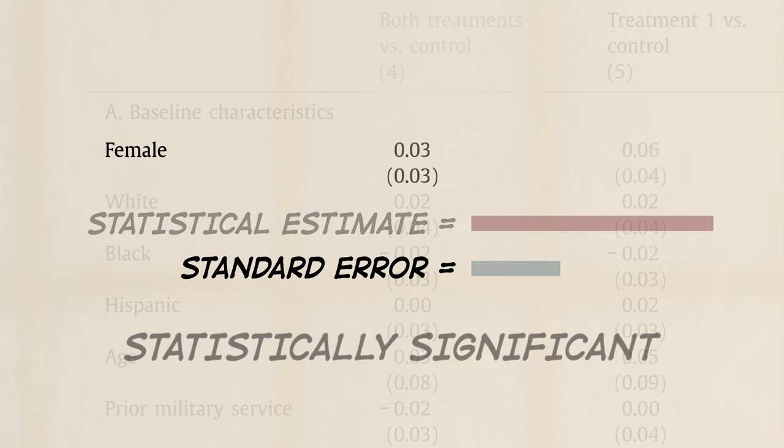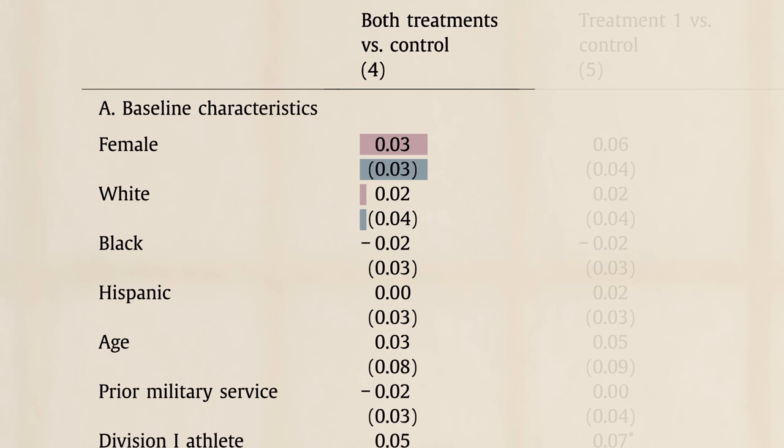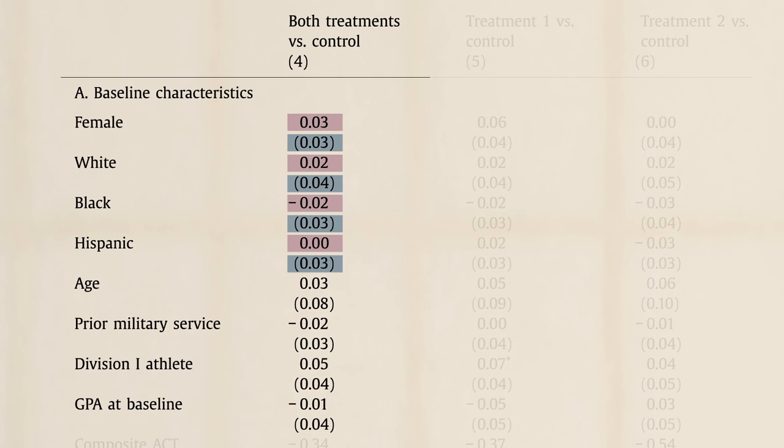The standard error is 0.03, same as the difference in proportion female. So the ratio of the latter to the former is only one, which of course is less than two. Uh-huh. So none of the treatment control differences in the table are more than twice their standard errors.